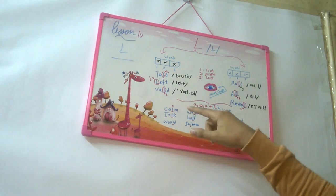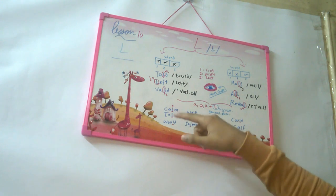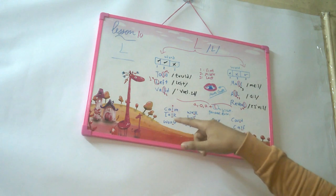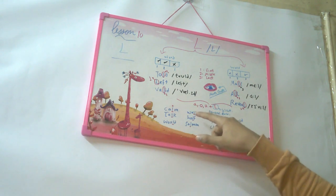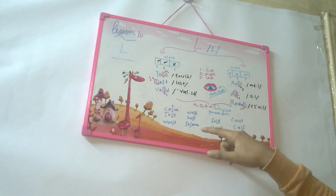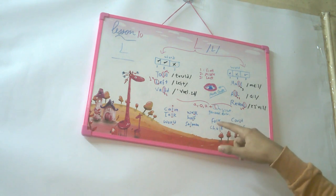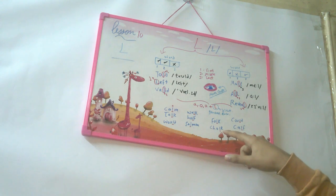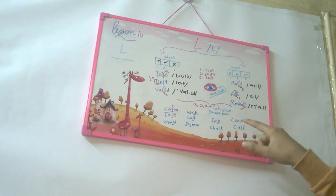So this word is calm, A-L. Talk, A-L. Would, U-L. Walk, A-L. Half, A-L. Salmon, A-L. Folk, O-L. Chalk, A-L. And could, U-L. And calf, A-L.